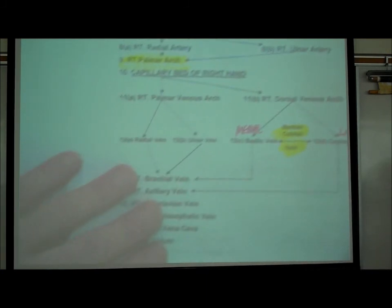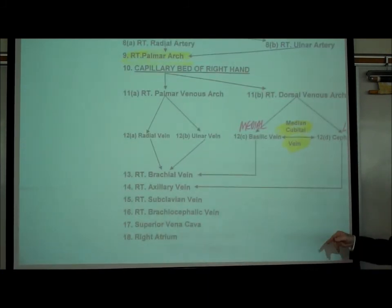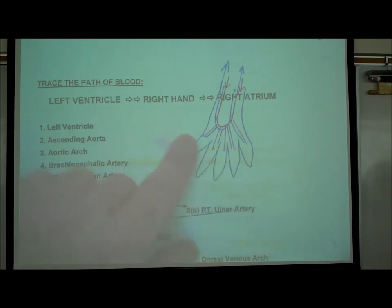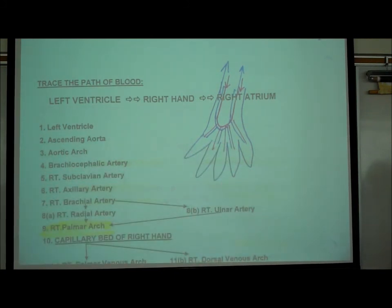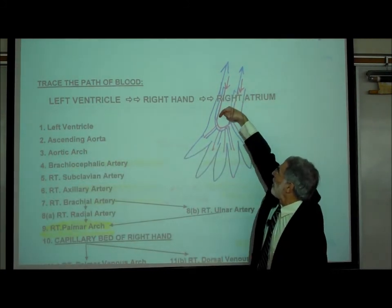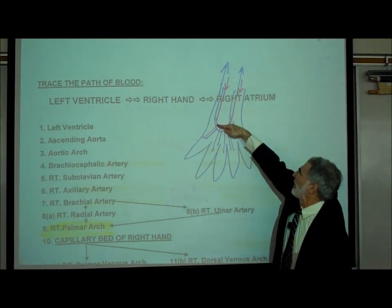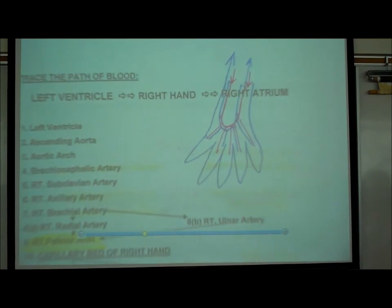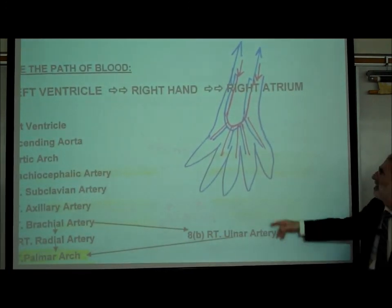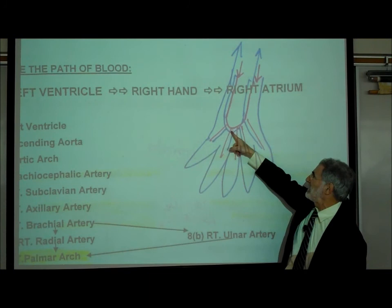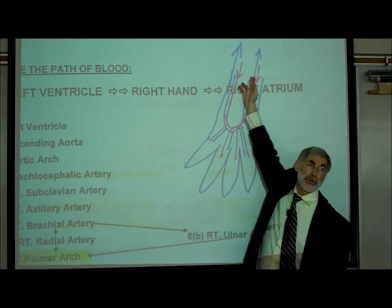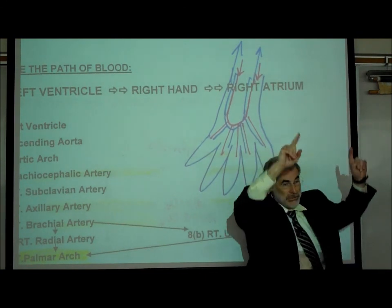The deep veins run in exactly the opposite direction as the arteries. Just as we had a radial artery and an ulnar artery that formed a palmar arch deep in the palm, we have a palmar venous arch that forms a radial vein and an ulnar vein, with blood going in the reverse direction.